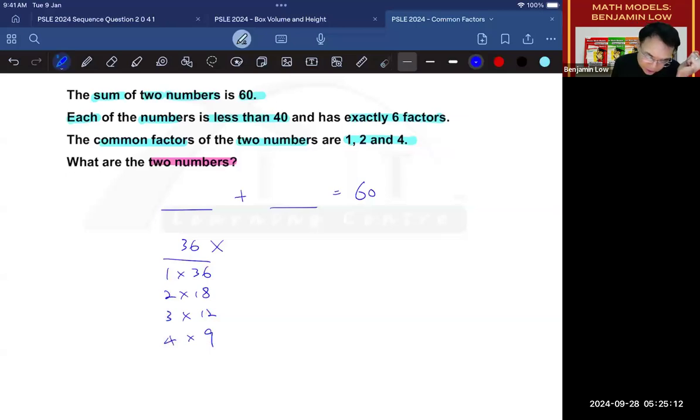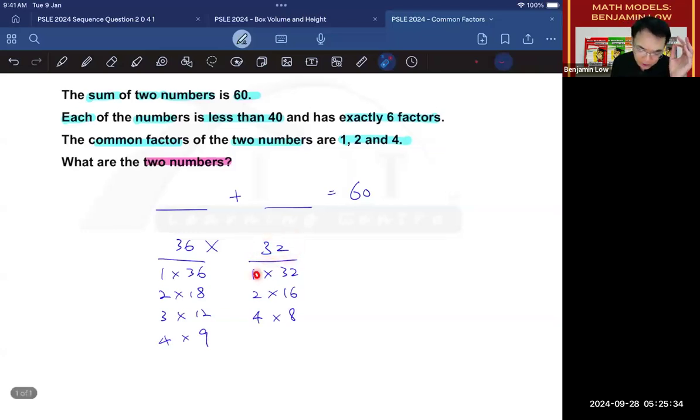32 is 1 times 32, 2 times 16, 4 times 8, and there are no other factors. So we know that 32 has fulfilled the condition of 1, 2, 3, 4, 5, 6, six factors.